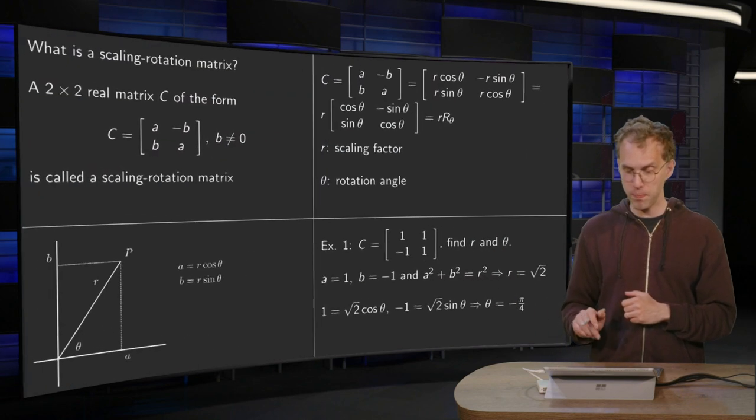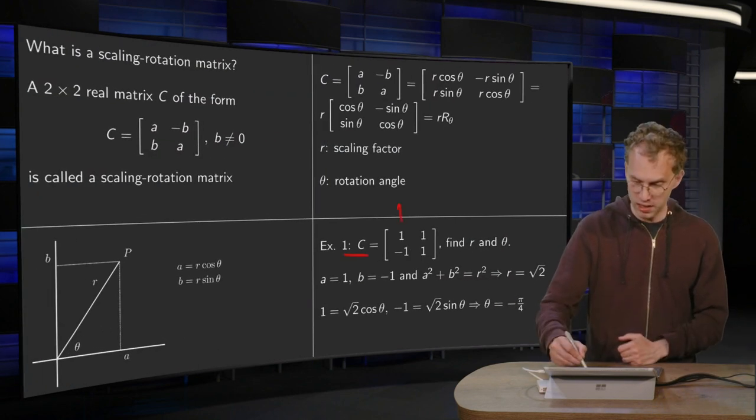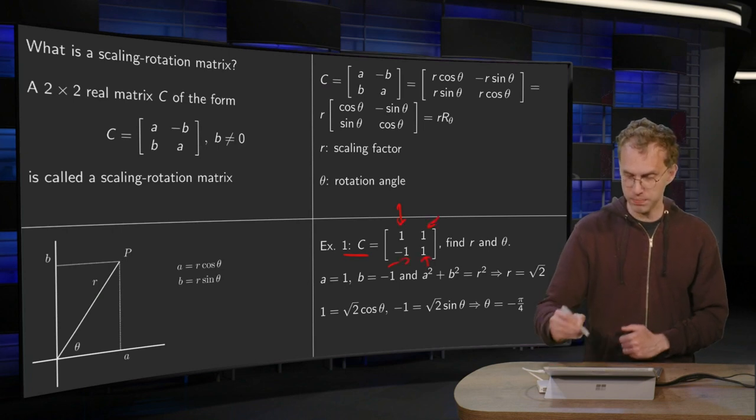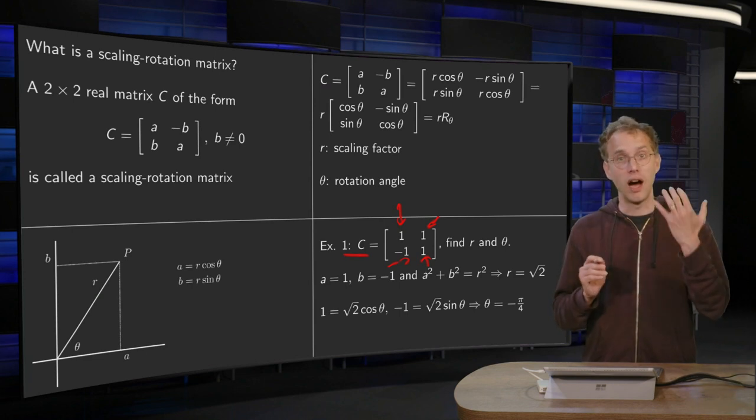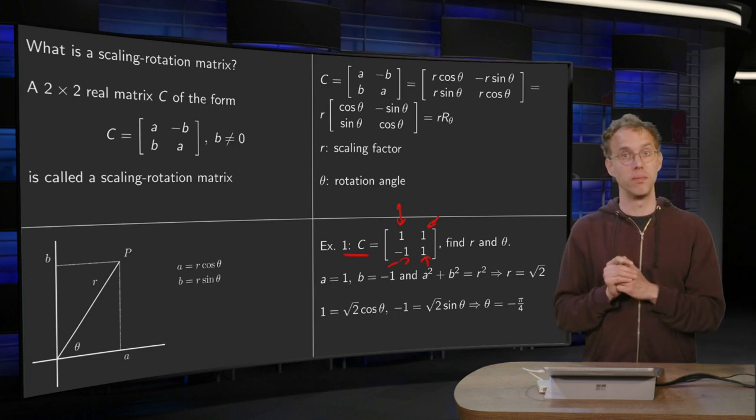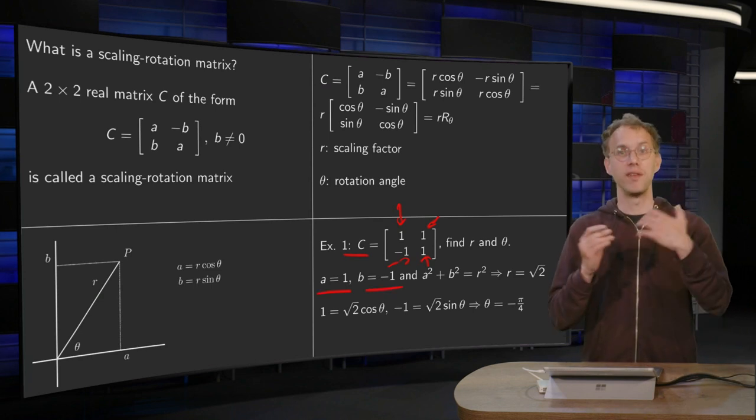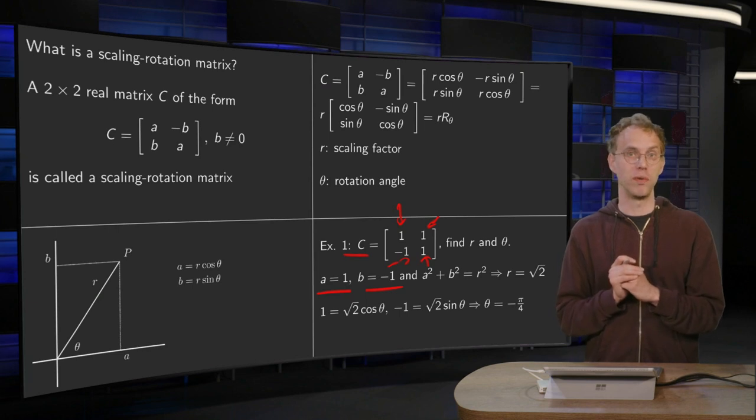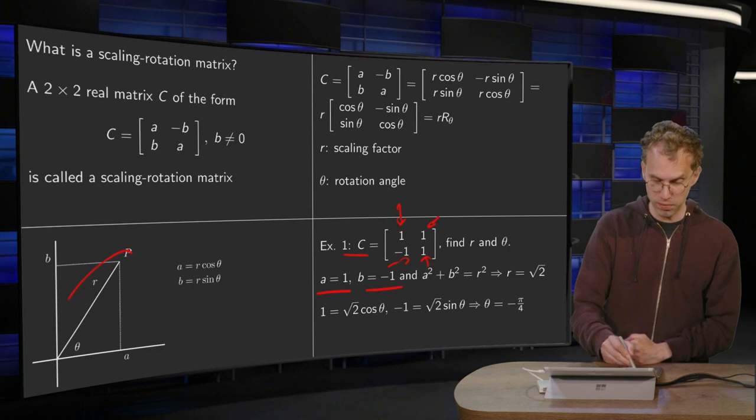So let's do a small example. Here we have an example of a C matrix. See, these elements are the same and these only differ in sign. The question is: find r and θ. So how do we do that? First we determine a and b. We read off a equals 1 and b equals minus 1. And then we can immediately determine r because we know r squared equals a squared plus b squared, for example from this figure.